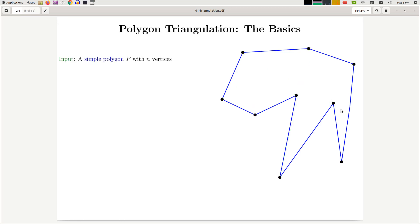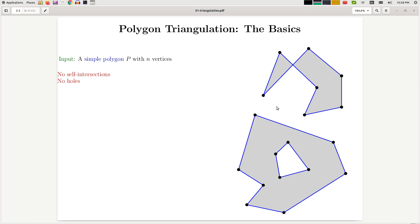Going back to the problem, we have a simple polygon. What this means is that the boundary of the polygon is connected and it does not have self-intersection. In particular, this means we don't have a picture that looks like this or like this. So this polygon—the boundary is self-intersecting. These two edges of the polygon intersect. That's not allowed.